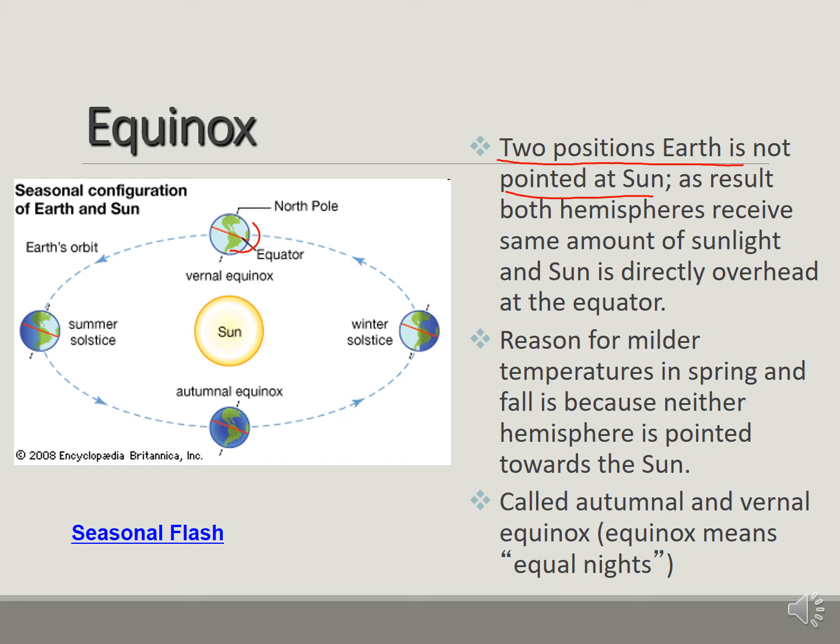So basically, this is why we have mild temperatures in the spring and fall, because neither hemisphere is pointed at the sun. So that's why in the spring sometimes it can be like 50, maybe 60, and the same thing in fall. So we call it equal. Equinox means equal. We have equal amount of time with the temperatures because we're not pointed at the sun during this time.